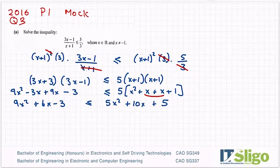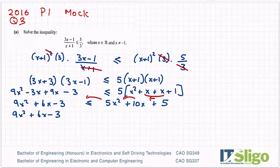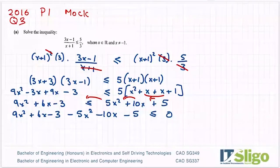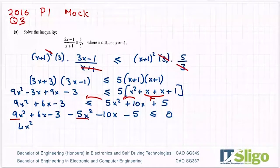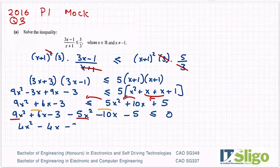I'm going to bring everything to one side since I can see a quadratic forming. So 9x² + 6x − 3 moves to the left, becoming minus, and I have ≤ 0 on the right-hand side. Collecting terms: 9 − 5 = 4x²; 6 − 10 = −4x; −3 − 5 = −8. So 4x² − 4x − 8 ≤ 0.